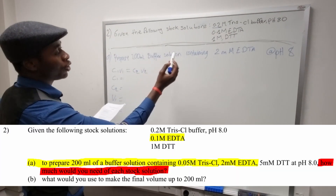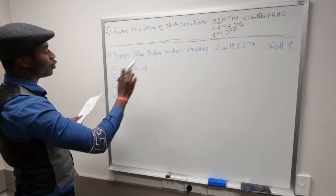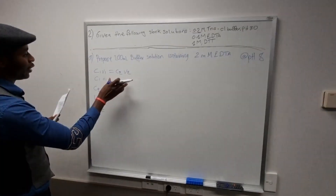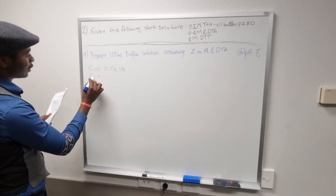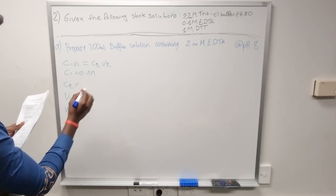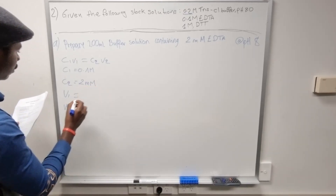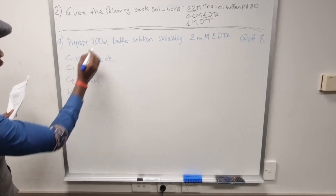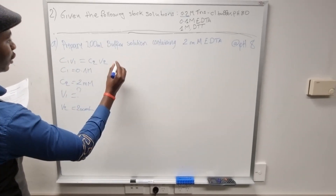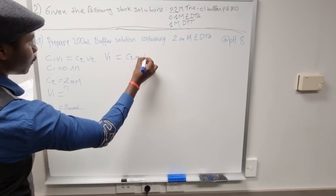Now for part two, we work with 0.1 molar EDTA. We use the same equation C1V1 = C2V2. Here C1 is 0.1 molar EDTA, C2 is 2 millimolar, V1 is unknown, and V2 is 200 milliliters.